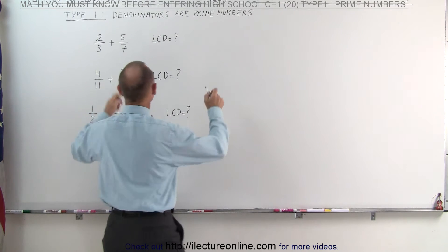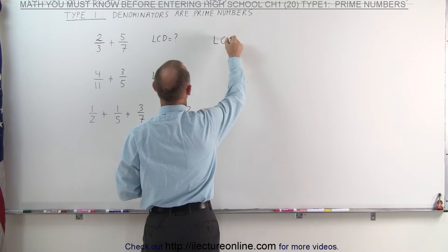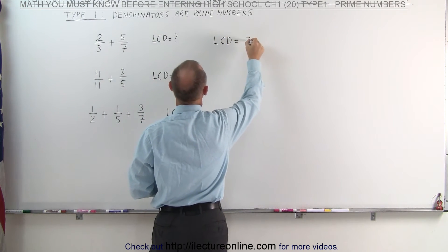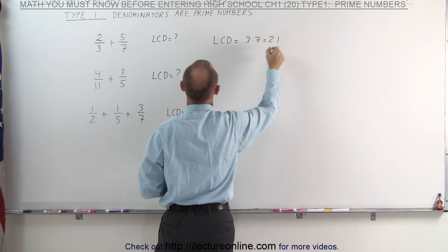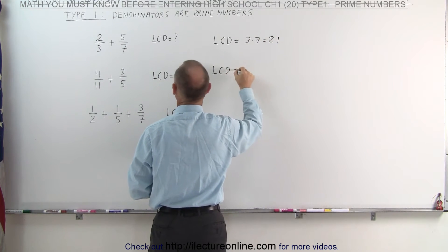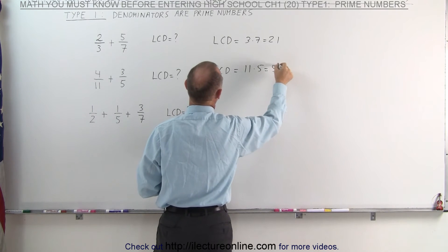That's our only option. So in this case, the lowest common denominator is simply equal to 3 times 7, which is 21. In this case, the LCD is equal to 11 times 5, which is 55.